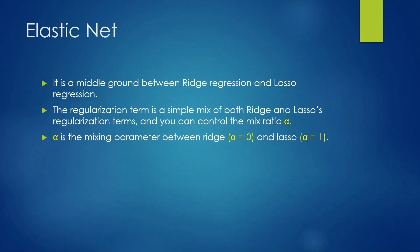Let's move on to elastic net. Elastic net is a middle ground between ridge regression and lasso regression. The regularization term is a simple mix of both ridge and lasso's regularization terms, and you can control the mix ratio alpha. Ridge regression has mix ratio 0 and lasso regression has mix ratio 1. Since elastic net stands between the two, you can control the mix ratio, which is one advantage of it.